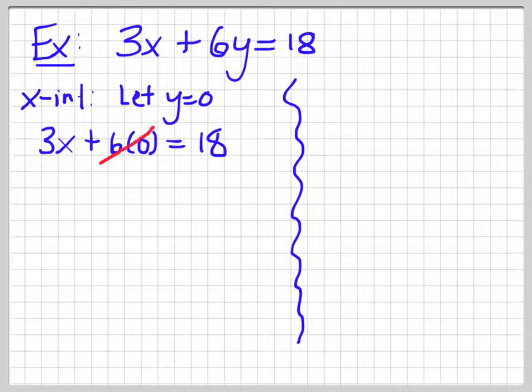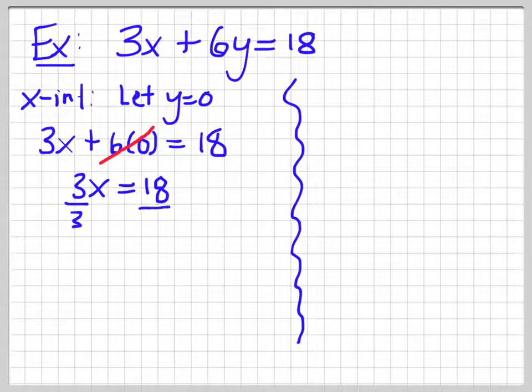So, I can cancel at this part because it's 0. So, I'm left with 3x is equal to 18. Then I end up dividing both sides by 3. And I get x is equal to 6.